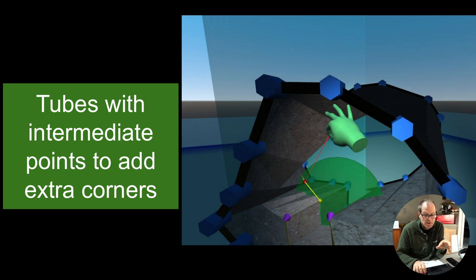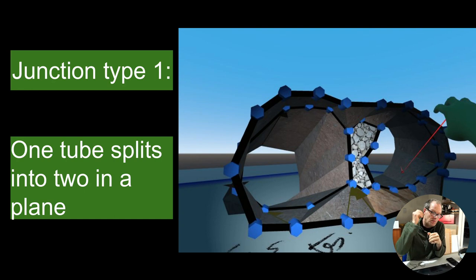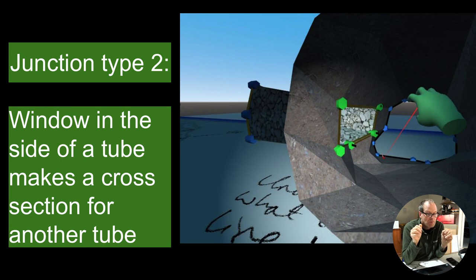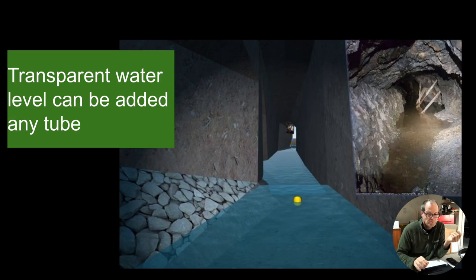There's two types of junctions. The first type is where one tube splits into two tubes, like in a fork. The second type of junction is where you have a window in the side of one of the tubes which goes off into another tube. Between these two, you can pretty much make any shape that you need. This is dealing with about 95% of the cave.